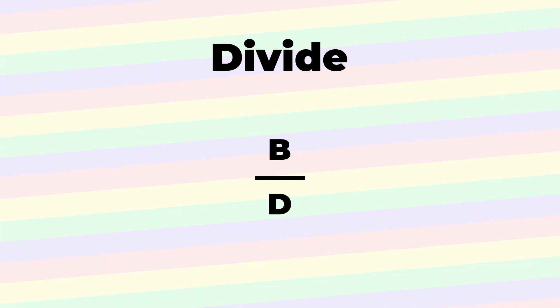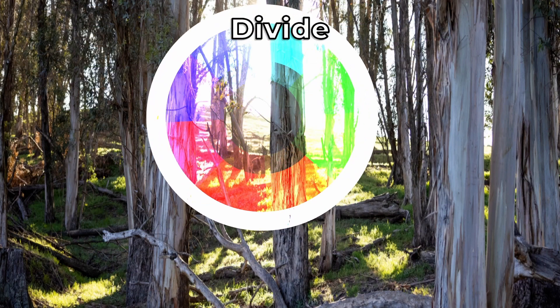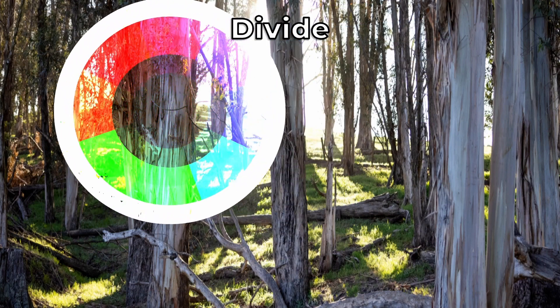And finally, an interesting one: Divide. Dark sections in the blend image will lighten the base image.